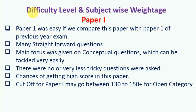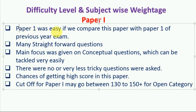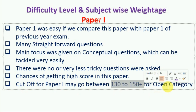Now let's start with the difficulty level and subject-wise weightage of Paper 1. Paper 1 was easy compared to Paper 1 of the previous year exam. The questions were simple and straightforward. The main focus was on conceptual questions, which were tackled very easily by the candidates, and there were no or very few tricky questions asked. Because of these factors, there are higher chances of getting a good score in this paper. The cutoff for Paper 1 may go in between 130 to 150 plus marks for open category.